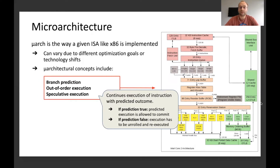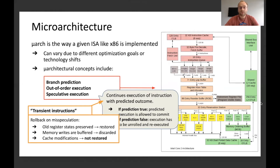Speculative execution is basically there to continue the execution with the predicted outcome. That means if the prediction is true, those executed instructions are allowed to be committed and to retire on the CPU. If the prediction is false, everything has to be unrolled and re-executed with the correct outcome. Those instructions that are executed with the prediction are called transient instructions.